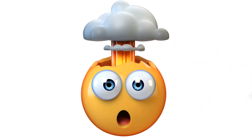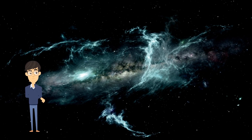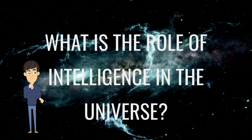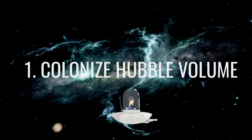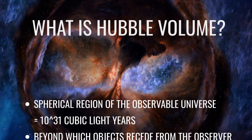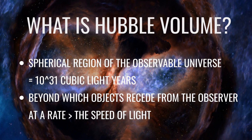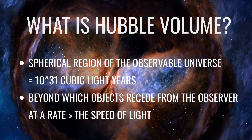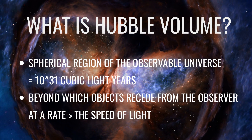Now that we have explored the three stages of life, let us answer the next big question: what is the role of intelligence in the universe? The first possible role of intelligence is to colonize the Hubble volume. As a reminder, the Hubble volume is a spherical region of the observable universe equal to approximately 10 to the power of 31 cubic light-years.